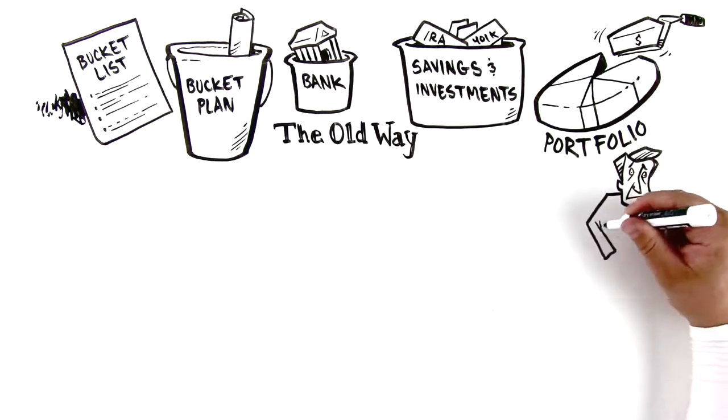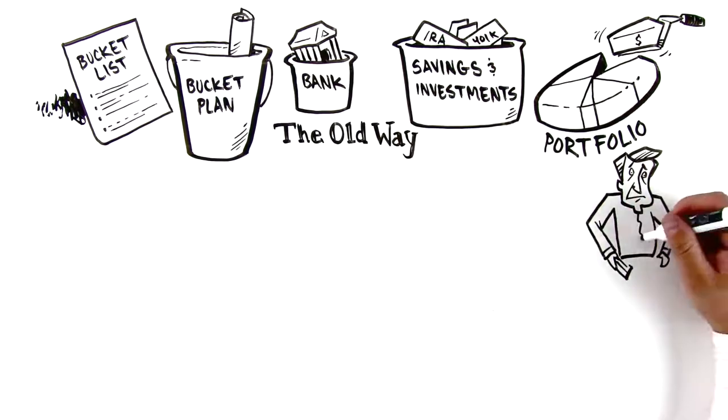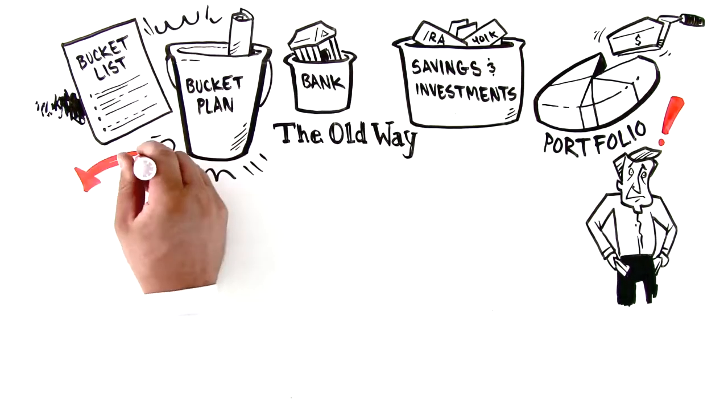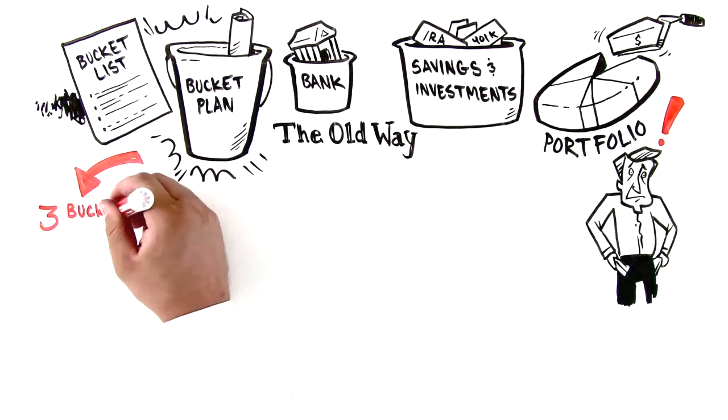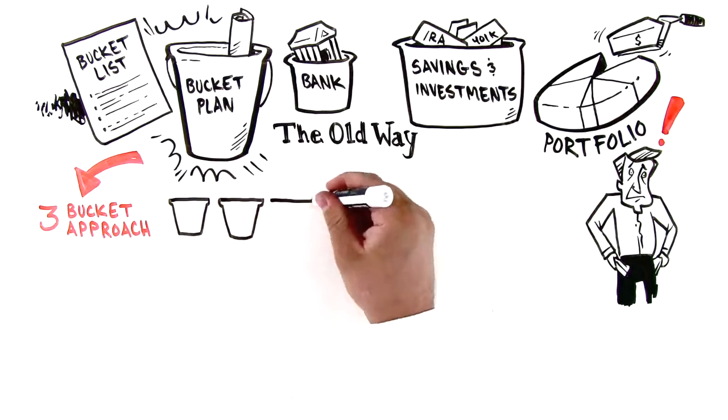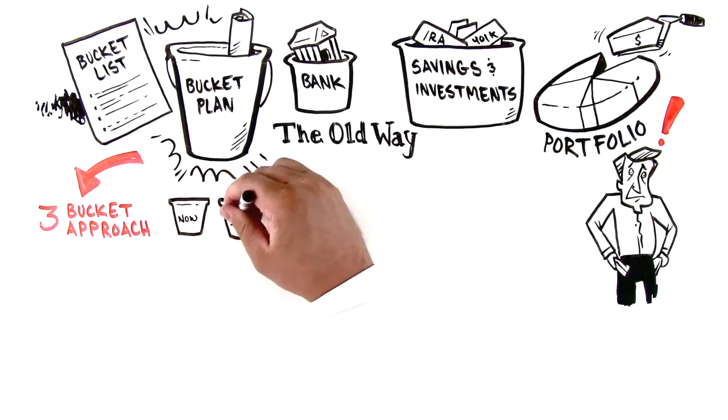Enter the bucket plan. The bucket plan is a three-bucket approach to structuring your assets to provide reliable income throughout retirement. This includes now, soon, and later buckets.